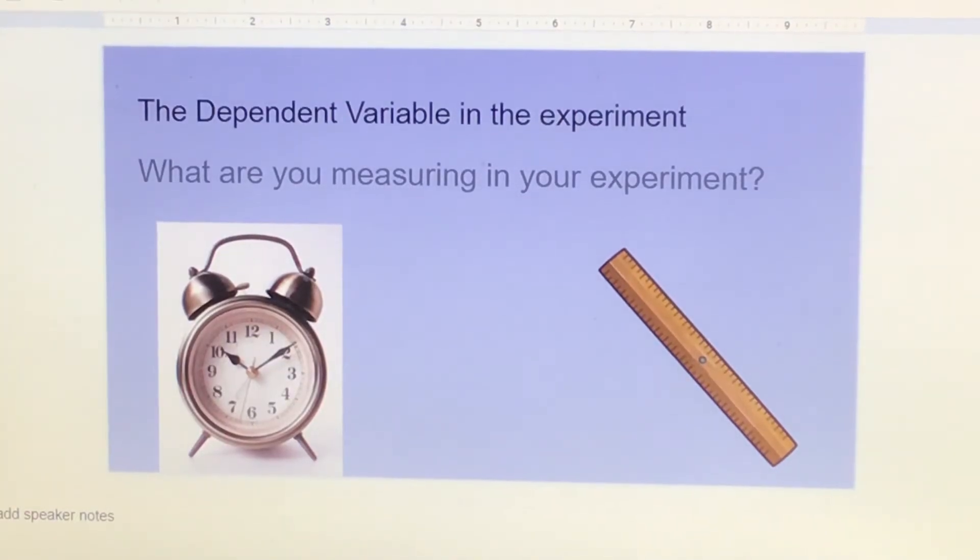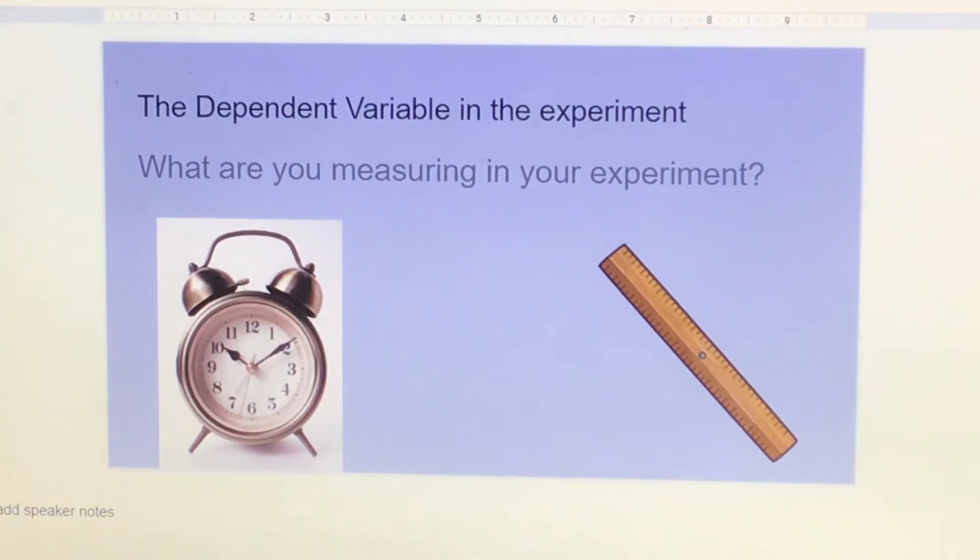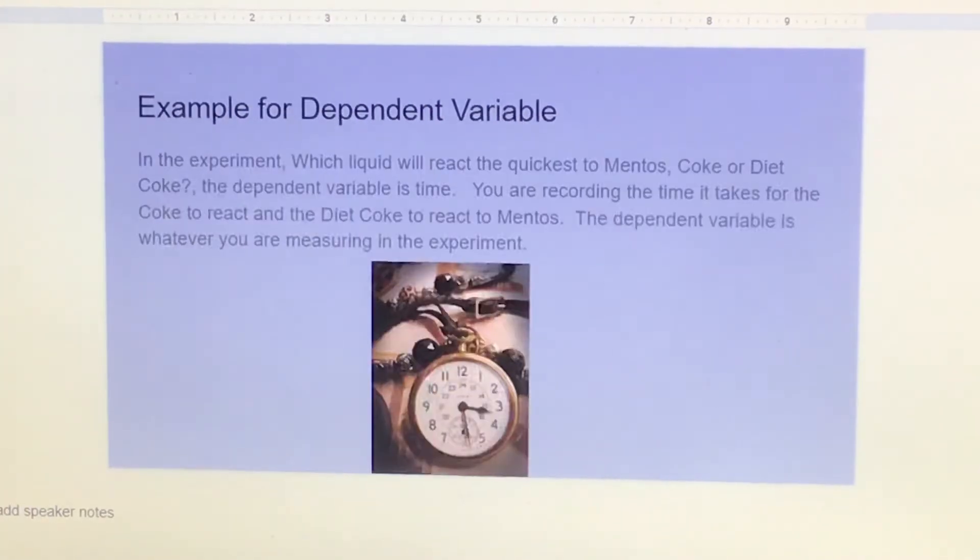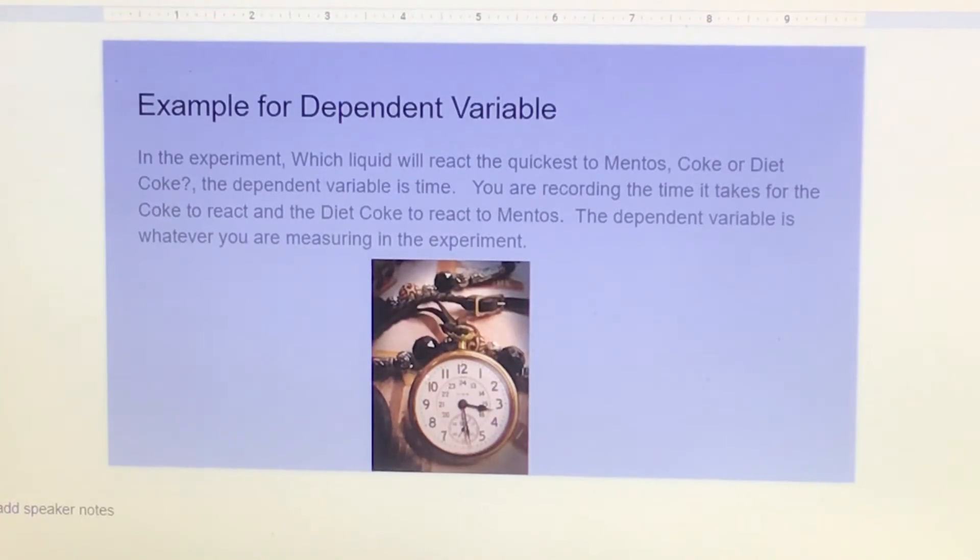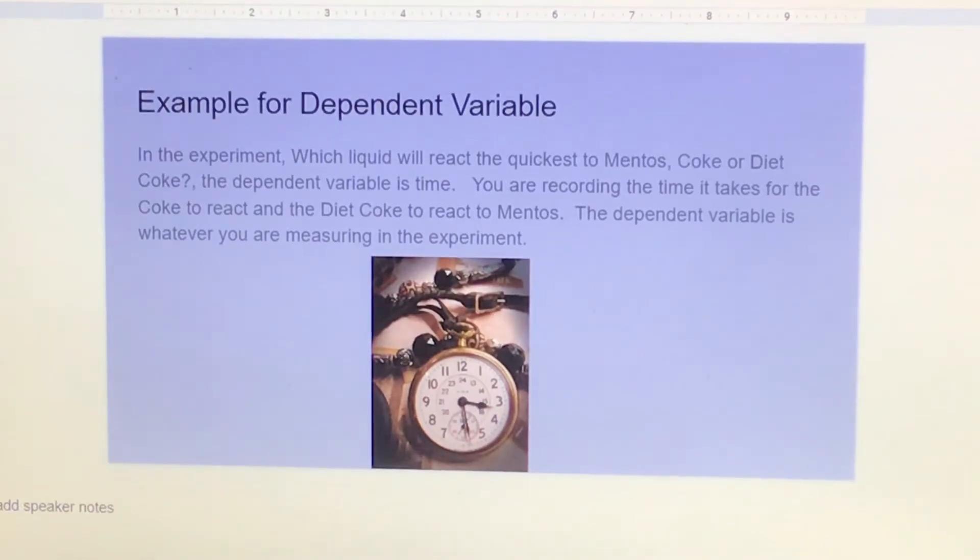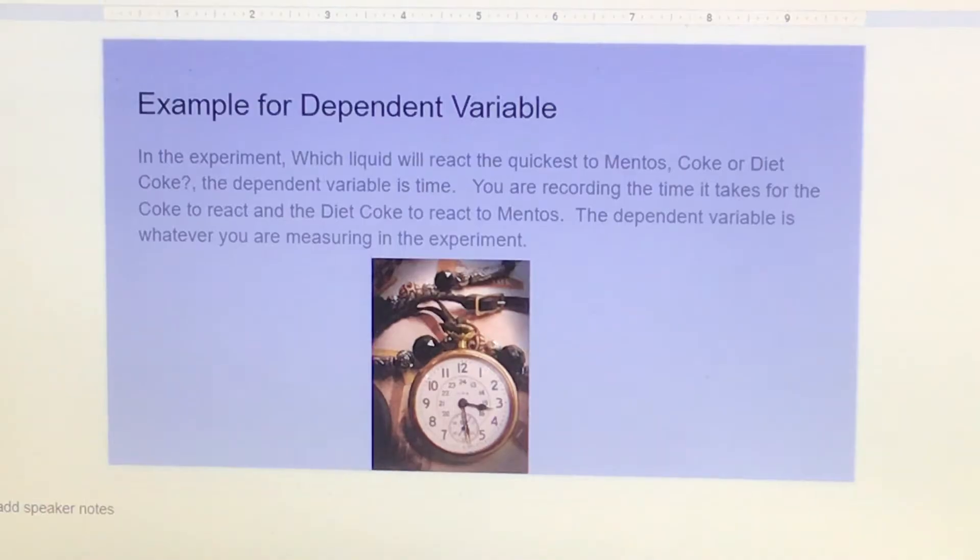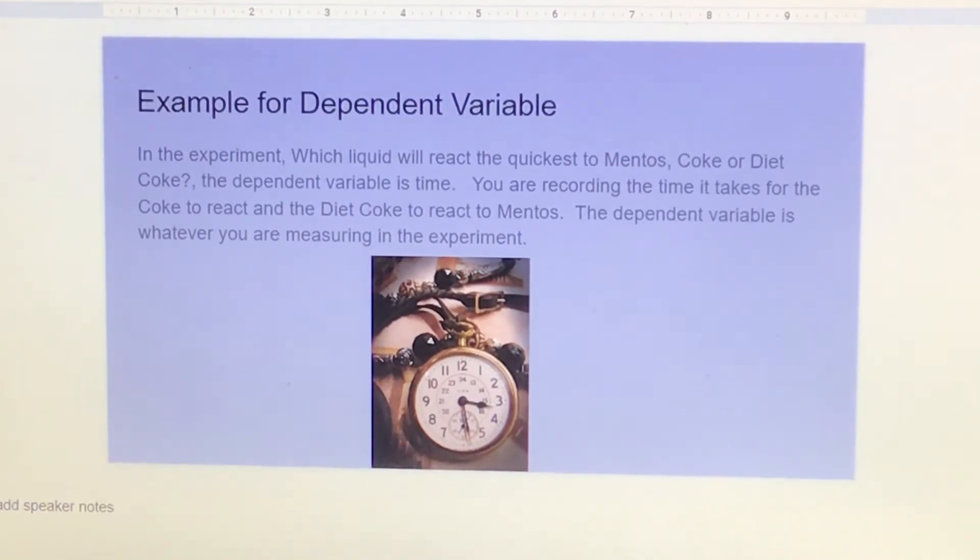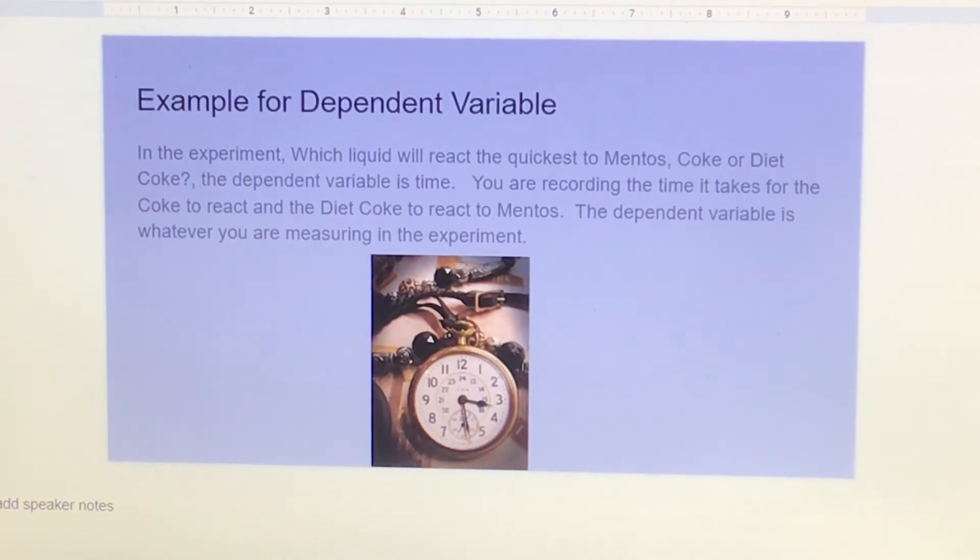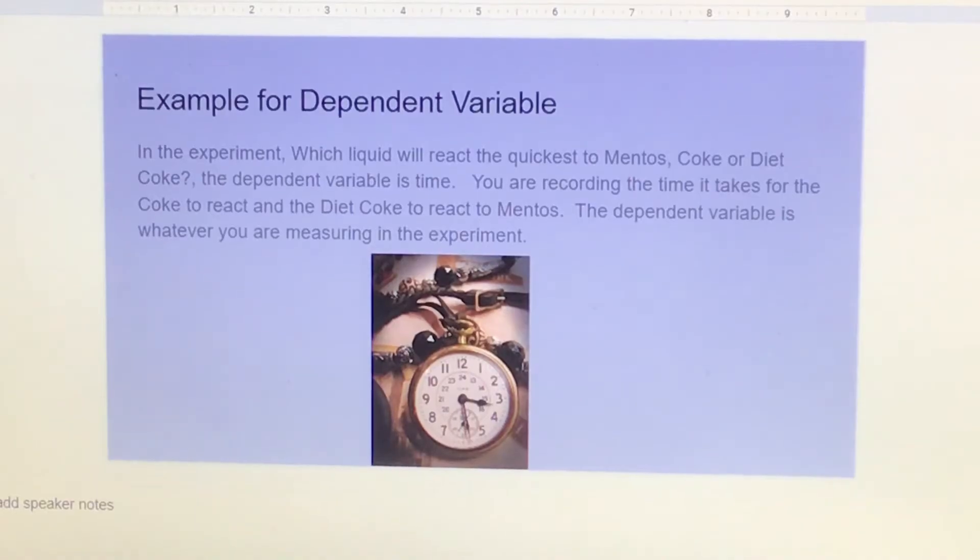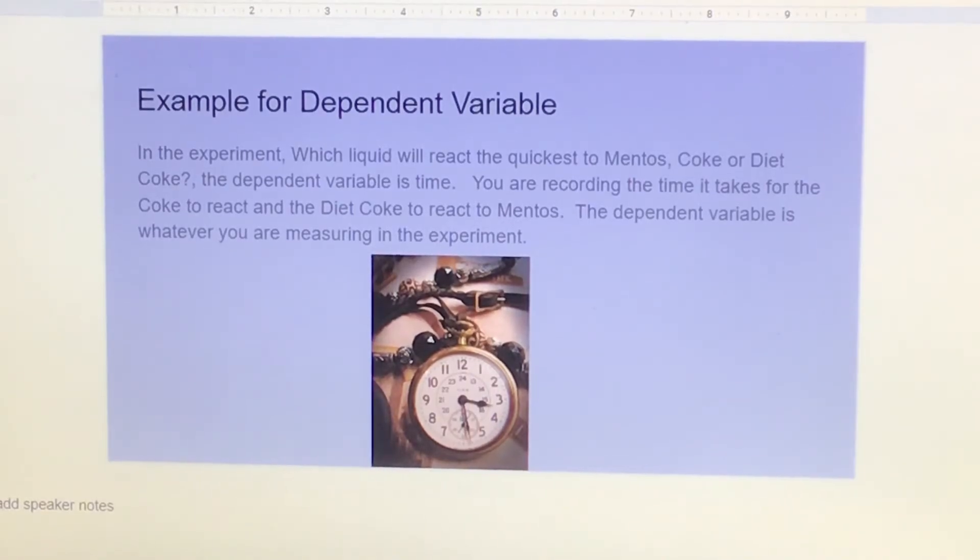The dependent variable in an experiment is what you're measuring. What are you measuring scientifically? Sometimes that's hard to figure out exactly what you're measuring. An example: in the experiment which liquid will react the quickest to Mentos, Coke or Diet Coke, the dependent variable is the time. You're recording the time it takes for the Coke to react and the Diet Coke to react to the Mentos. The dependent variable is whatever you are measuring in the experiment.